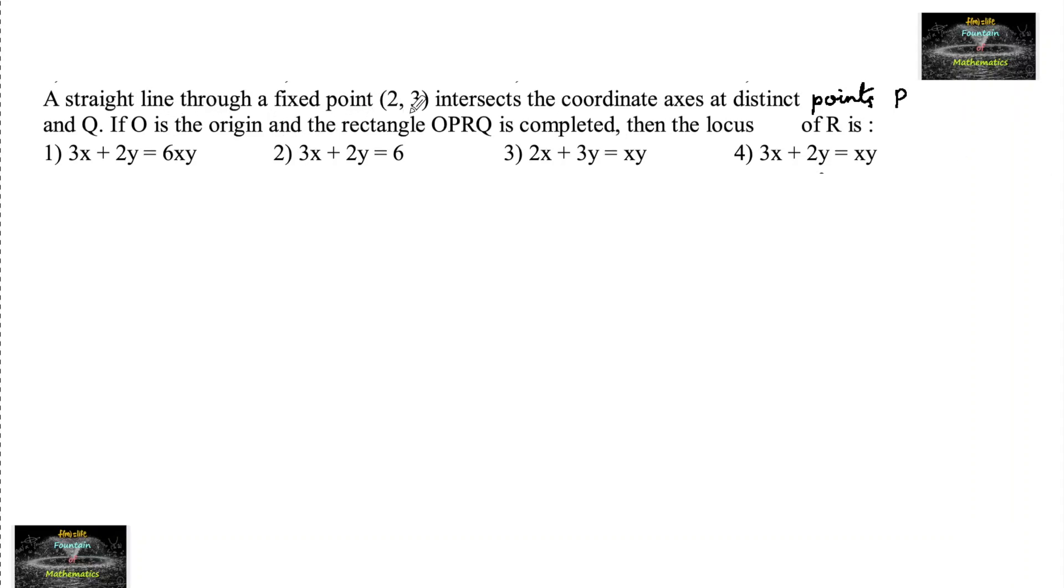A straight line through a fixed point (2,3) intersects the coordinate axes at distinct points P and Q. If O is the origin and the rectangle OPRQ is completed, then the locus of R is...